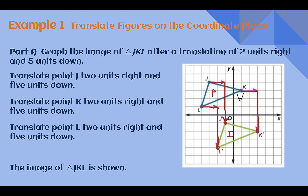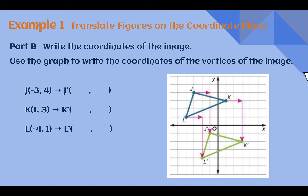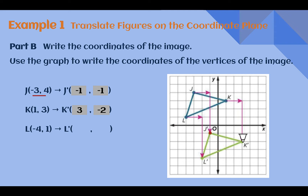These two figures are congruent — the same shape and the same size, just in a different place. With translations and other transformations, it's important to be able to write the coordinates of the image. J was originally at negative three, four. J prime after moving two to the right and five down is now at negative one, negative one. K prime is at three, negative two. And L prime is at negative two, negative four. After moving the entire shape, we can see where the vertices end up and write our coordinates from there.